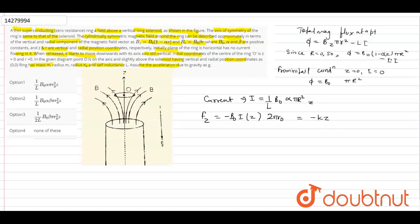So equation of motion of the ring will be m az equals fz minus mg, which becomes minus kz minus mg. So the equivalent position...